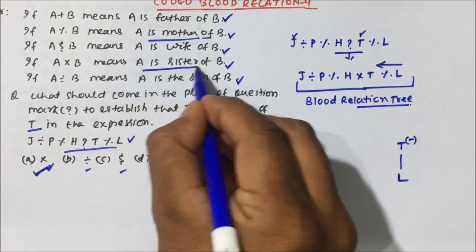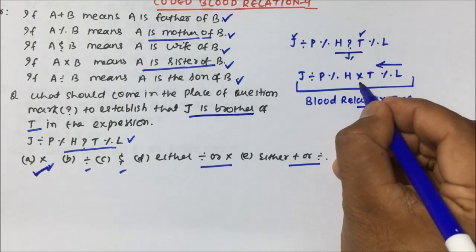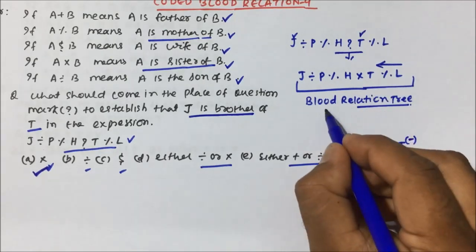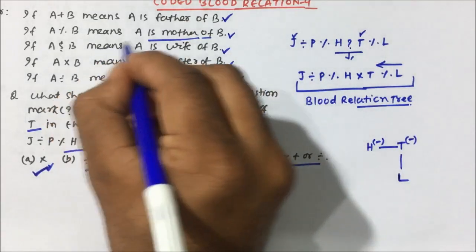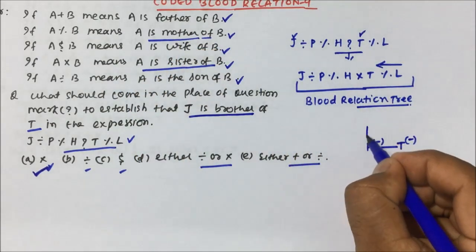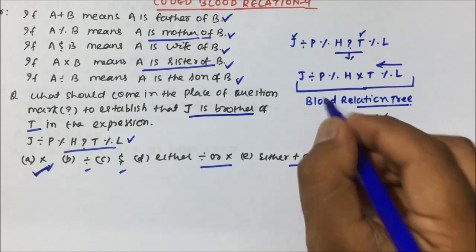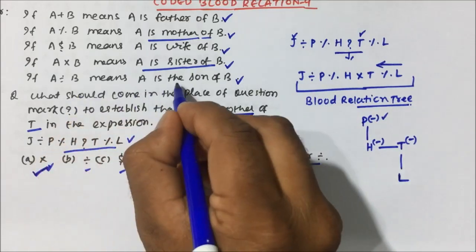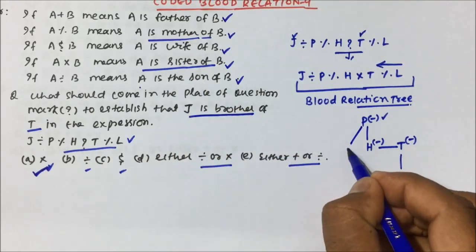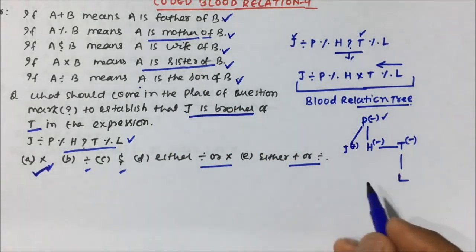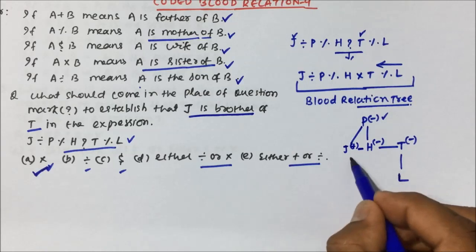We replaced the question mark with multiplication and continue drawing the tree. P percentage H means P is mother of H — mother means female, indicated by a minus sign. Then J division P means J is son of P. So J is son of P, making J male.